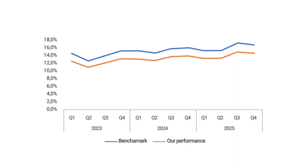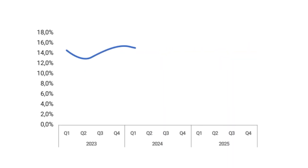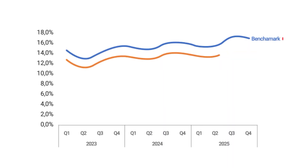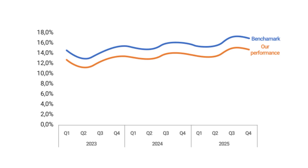Drop the legend and add the category label directly at the end of each line, not at the bottom. That way people instantly know which line is which. For forecasted values, make that part of the line dotted — it visually signals what's projected without saying a word.